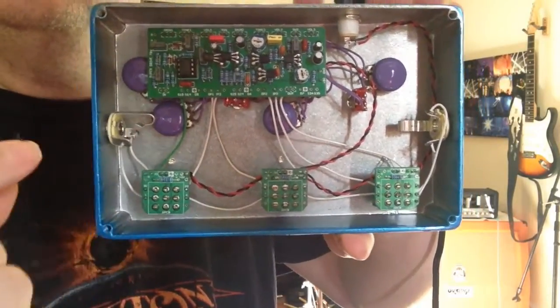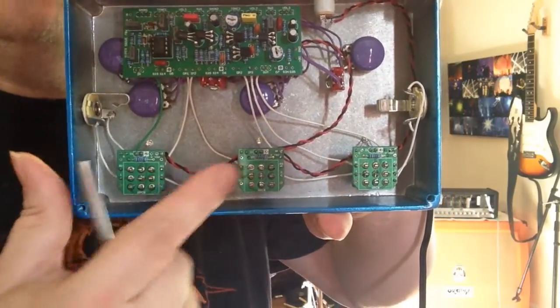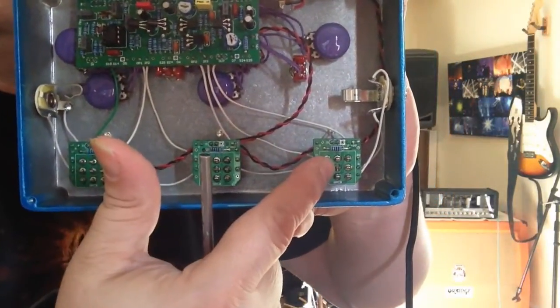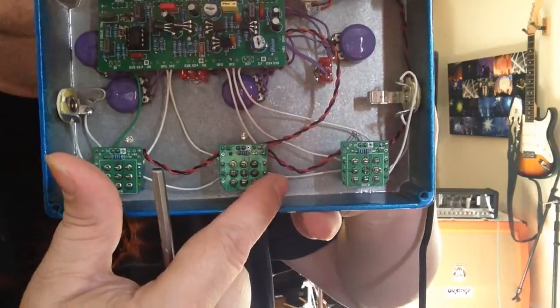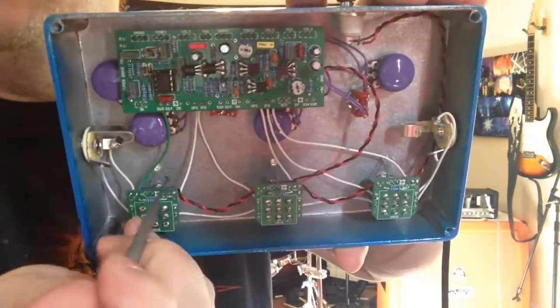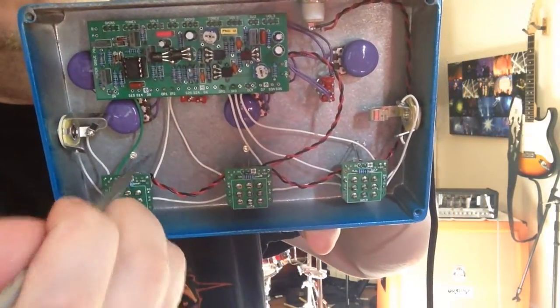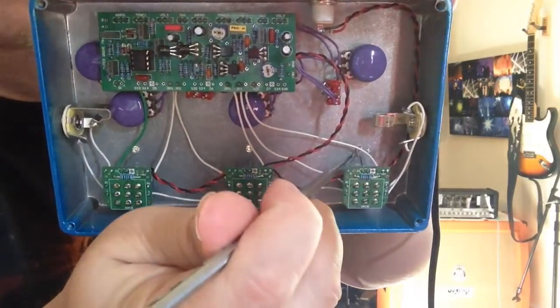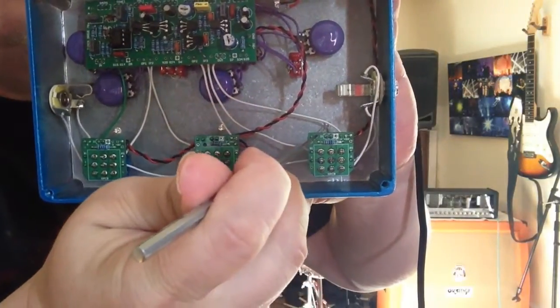Also, notice that because of using our 3-pole double throw wiring boards, it is very easy to keep your build nice and neat, keeps your LEDs secure to the enclosure once they are soldered in place.